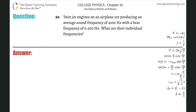Number 60. Twin jet engines on an airplane are producing an average sound frequency of 4100 hertz with a beat frequency of 0.5 hertz. What are their individual frequencies?